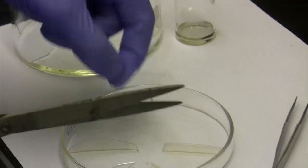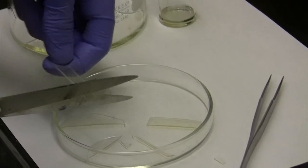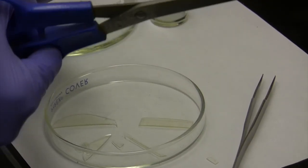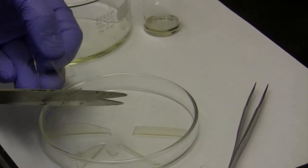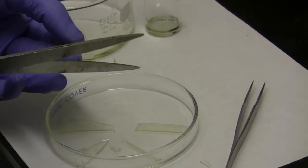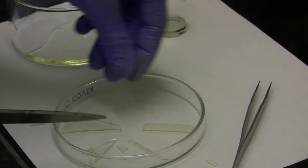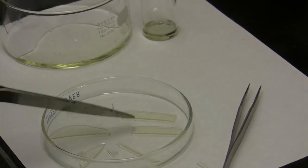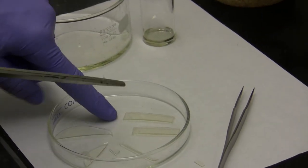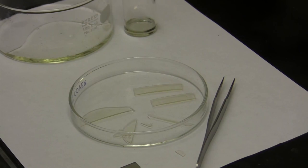And we're going to cut this into rectangular strips. There's one. And so those are great samples for DMA. We're ready to do that experiment with those now.